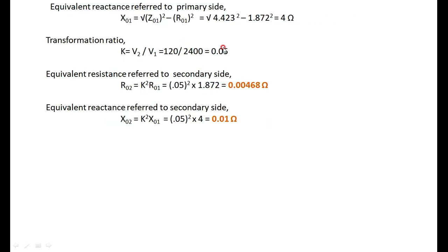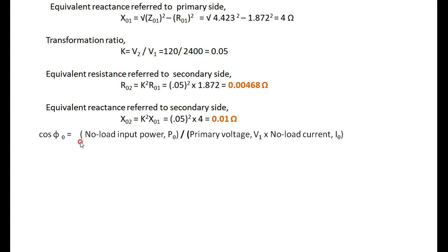Transformation ratio k = 120 / 2400 = 0.05. To calculate regulation, we need R02 and X02 referred to the secondary side. R02 = k² × R01 = 0.00460 ohm. X02 = k² × X01 = 0.01 ohm. These are the equivalent resistance and reactance referred to the secondary side.